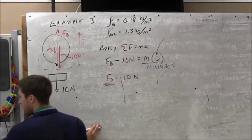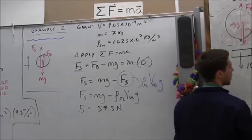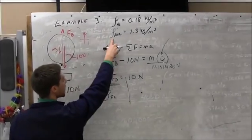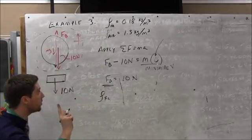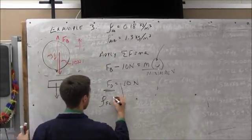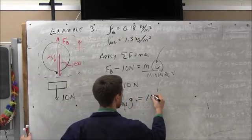And again, buoyant force as before was equal to density of fluid, volume of object, gravity. So this is going to be density of fluid. This time it's air, not helium. The thing is in air. So don't get those mixed up. Rho of fluid, volume of object times gravity, which equals 10 newtons.